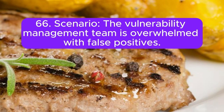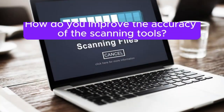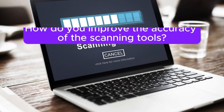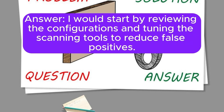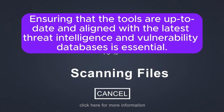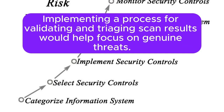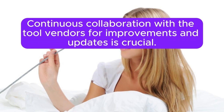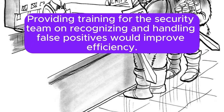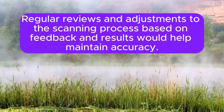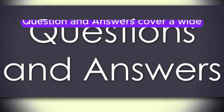Scenario 66: The vulnerability management team is overwhelmed with false positives. How do you improve the accuracy of the scanning tools? I would start by reviewing the configurations and tuning the scanning tools to reduce false positives. Ensuring that the tools are up to date and aligned with the latest threat intelligence and vulnerability databases is essential. Implementing a process for validating and triaging scan results would help focus on genuine threats. Continuous collaboration with the tool vendors for improvements and updates is crucial. Providing training for the security team on recognizing and handling false positives would improve efficiency. Regular reviews and adjustments to the scanning process based on feedback and results would help maintain accuracy.